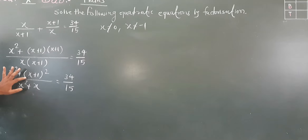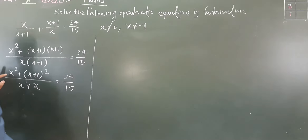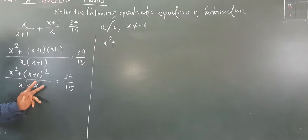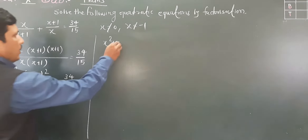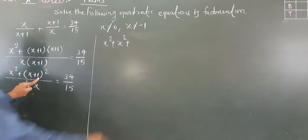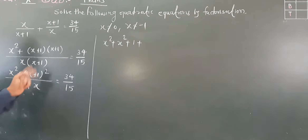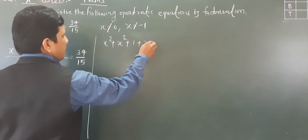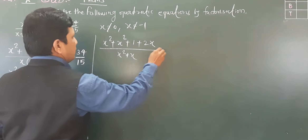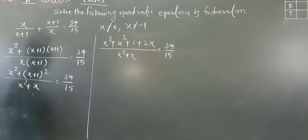Now we expand (x+1)². Using the identity (a+b)² = a²+2ab+b², we get x² + x² + 1 + 2x, so the numerator becomes x² + x² + 2x + 1, divided by x² + x, equal to 34/15.